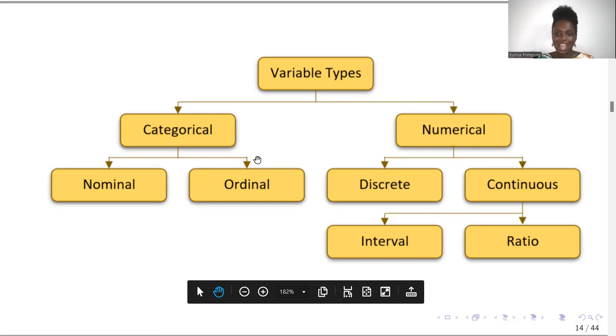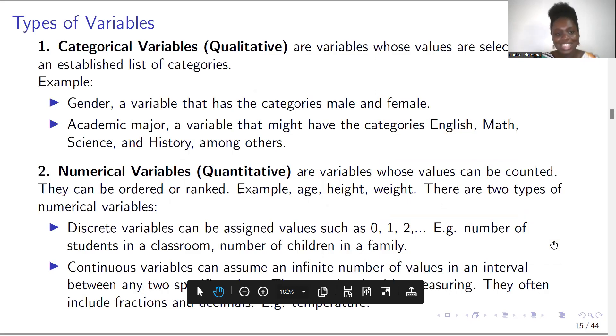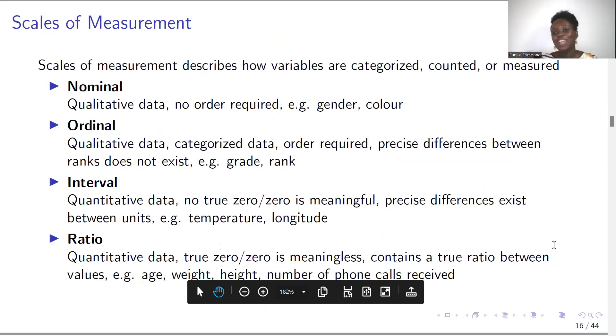The last lane of this flowchart where we have the nominal, ordinal, interval, and then the ratio variables will be looked at in more detail. They are usually called scales of measurements. They describe how variables are categorized or counted or measured. So in the next session, we'll have a look at these measures of variables.